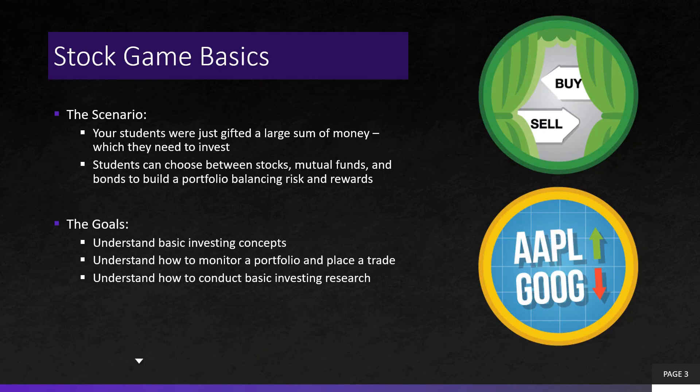So first up, the stock game basics. What is a stock game? Your students, when they sign in, are given a bunch of money — the most common is $100,000, which is usually configured by the teacher — and they need to invest it. They can choose between stocks, mutual funds, and bonds, maybe some other security types, to build a portfolio balancing their own risk appetite and the reward they're seeking. It's just like if the students had their own brokerage account that they needed to start investing on their own.